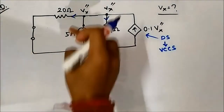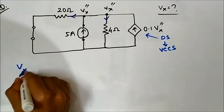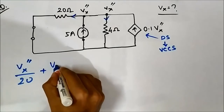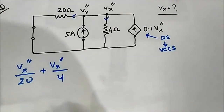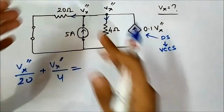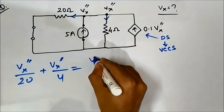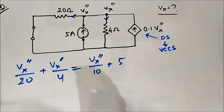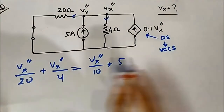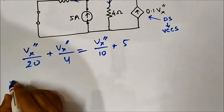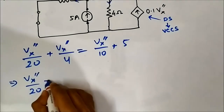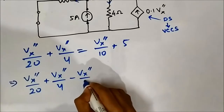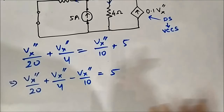Writing all outgoing currents: Vx''/20 and Vx''/4. The incoming currents are Vx''/10 and 5 ampere. So the nodal equation is: Vx''/20 + Vx''/4 − Vx''/10 = 5. Our objective is to find Vx''.